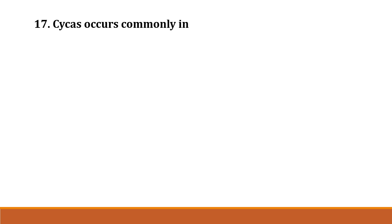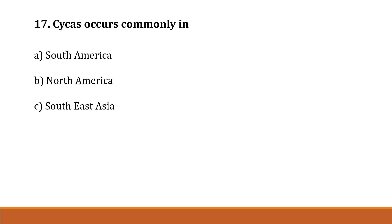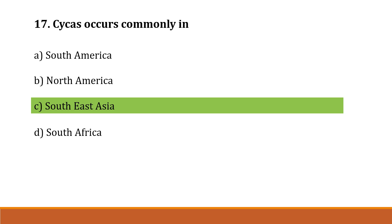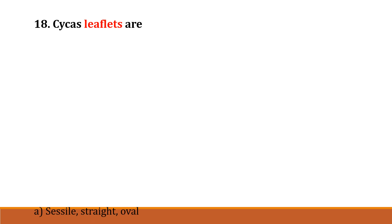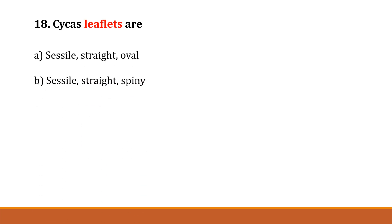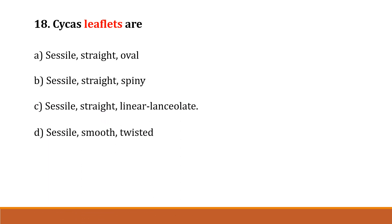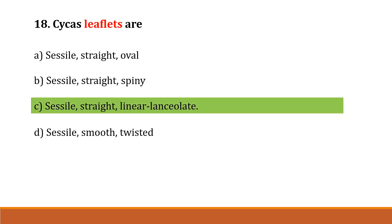Question number 17: Cycas occurs commonly in Option A: South America, Option B: North America, Option C: South East Asia, Option D: South Africa. The correct answer is Option C, South East Asia. Question number 18: Cycas leaflets are Option A: sessile, straight, oval, Option B: sessile, straight and spiny, Option C: sessile, straight, linear lanceolate, Option D: sessile, smooth and twisted. The correct answer is Option C, sessile, straight and linear lanceolate. Sessile means petiole is absent.